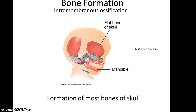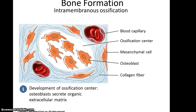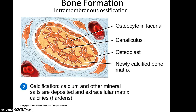We will start with intramembranous ossification, which is how most of the bones of the skull are formed. You have a large sheet of mesenchymal tissue, and within that sheet some cells differentiate into osteoblasts. These osteoblasts will begin secreting and forming the organic extracellular matrix. The osteoblasts will then begin deposition of calcium and phosphate into this extracellular matrix, and this will harden or calcify.